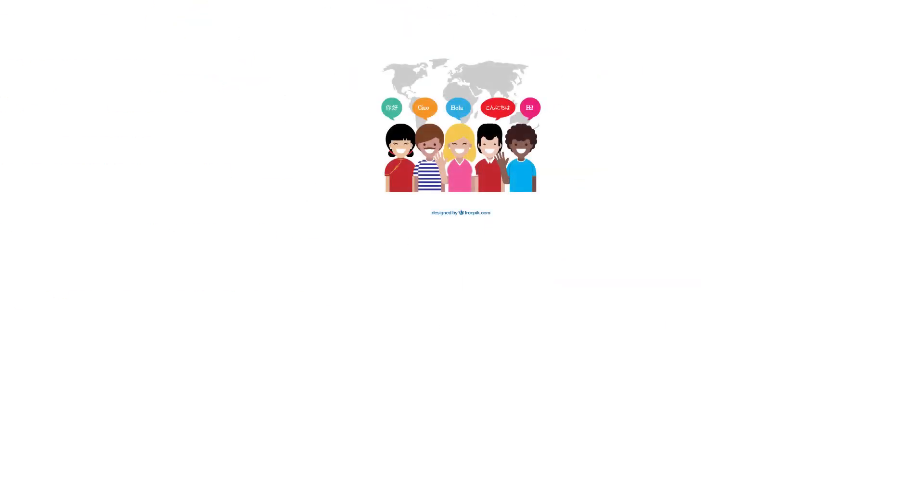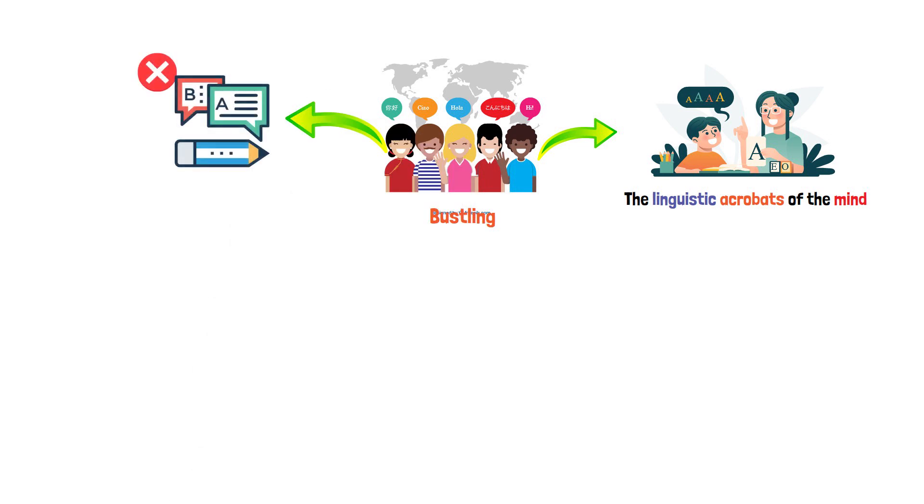Language and learning development, too, are bustling. Children start to grasp complex grammar, the linguistic acrobats of the mind. It's not just about learning words, it's about weaving them into a tapestry of communication and understanding.